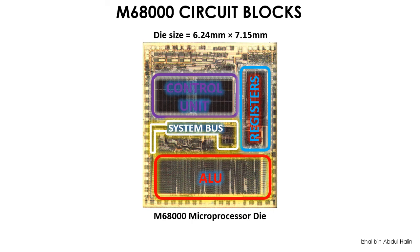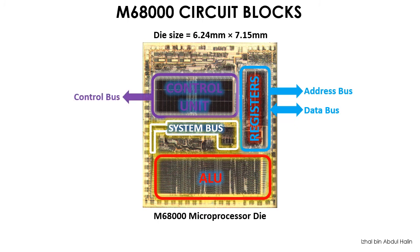The address bus and data bus are tapped out of the CPU's register. Control signals such as asynchronous and synchronous control lines, bus control lines, system control lines, and the CPU status lines are tapped out of the control unit.